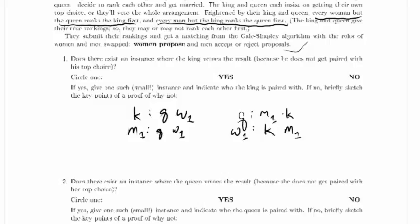And now the only stable solution to this problem has M1 paired up with the queen and the king unhappily paired up with W1. And this right here will cause a veto from the king. Okay, so yes.